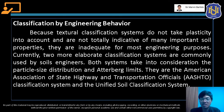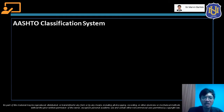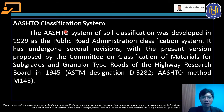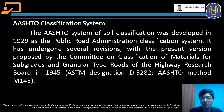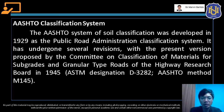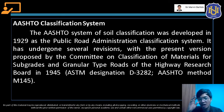The AASHTO system of soil classification was developed in 1929 as the Public Road Administration Classification System. It has undergone several revisions, with the present version proposed by the Committee on Classification of Materials for Subgrades and Granular Type Roads of the Highway Research Board in 1945. AASHTO originated in the US and is used worldwide, including in the Philippines and other countries.